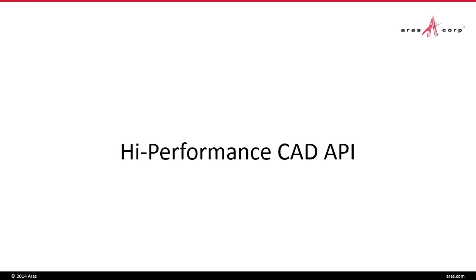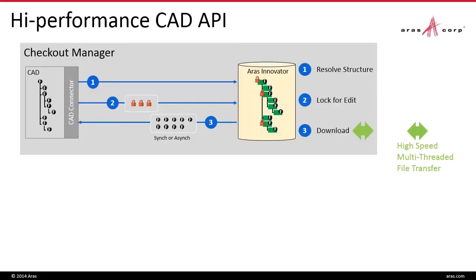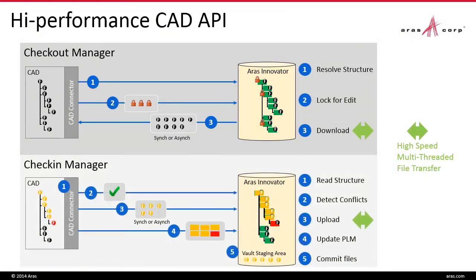Next, let's look at our high-performance CAD API. This consists of two main API calls. Checkout Manager provides high-speed ability to check out files and the appropriate structure from ARIS Innovator — first by resolving the structure, locking the appropriate components for edit, and then downloading the files to local disk. The reverse is Check-in Manager, which enables high-speed check-in of complete CAD structures by first reading the structure, detecting conflicts, uploading data, updating PLM, and committing the files. With this, we can provide industry-leading performance for CAD data management.